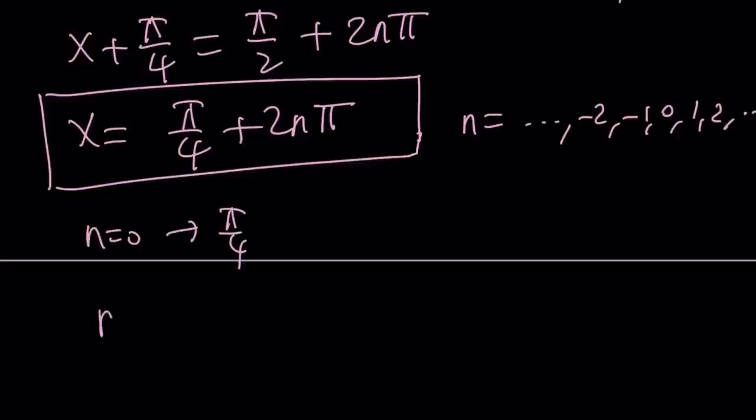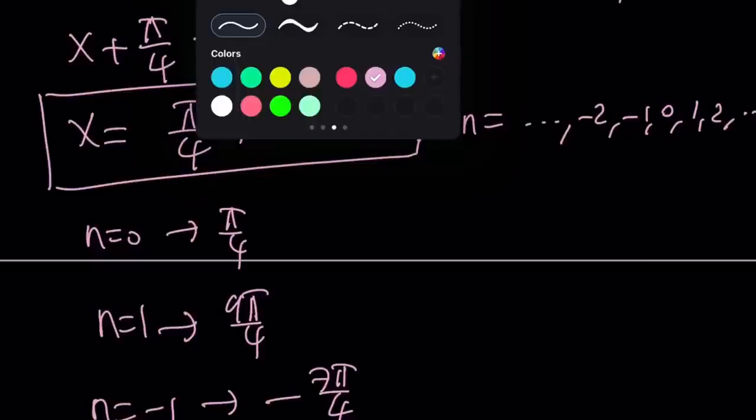If n is 0 you get pi over 4. If n is 1 you get 9 pi over 4. If n is negative 1 you get pi over 4 minus 8 pi over 4 which is negative 7 pi over 4 and so on and so forth. So there are infinitely many solutions. That is the first method and let's go ahead and take a look at the second method.